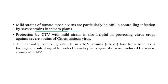Protection using mild strains of citrus tristeza virus is helpful in protecting citrus crops against severe strains. Additionally, naturally occurring satellite RNA of cucumber mosaic virus (CMV) has been used as a biological control agent to protect tomato plants against disease induced by cucumber mosaic virus.